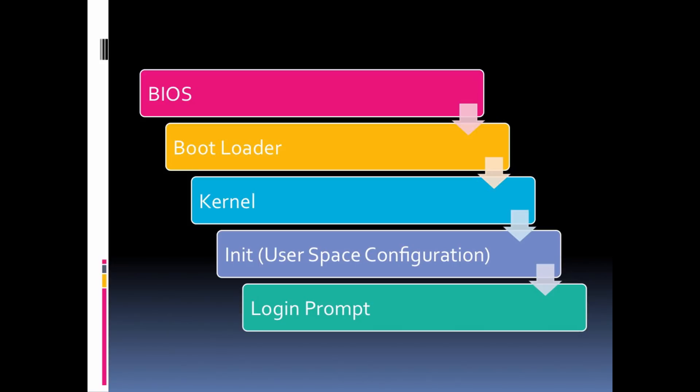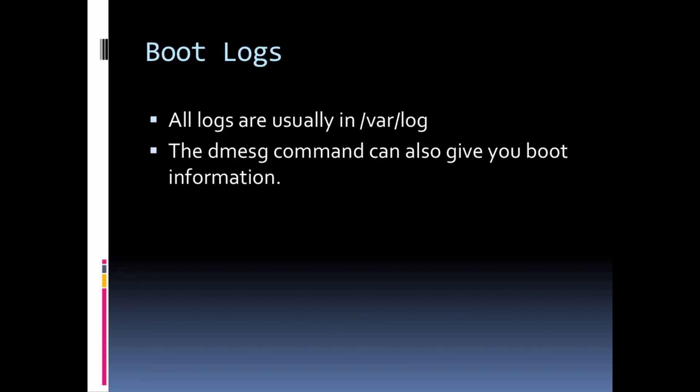All this stuff happens — but where can we find information about it? There are boot logs. Everything that would normally scroll by on your screen when you boot can be found in your boot logs on your hard drive in a directory called /var/log. In there you'll find a log called dmesg. The dmesg log contains all your boot messages. There's also a command called dmesg that will dump that log to the command line.